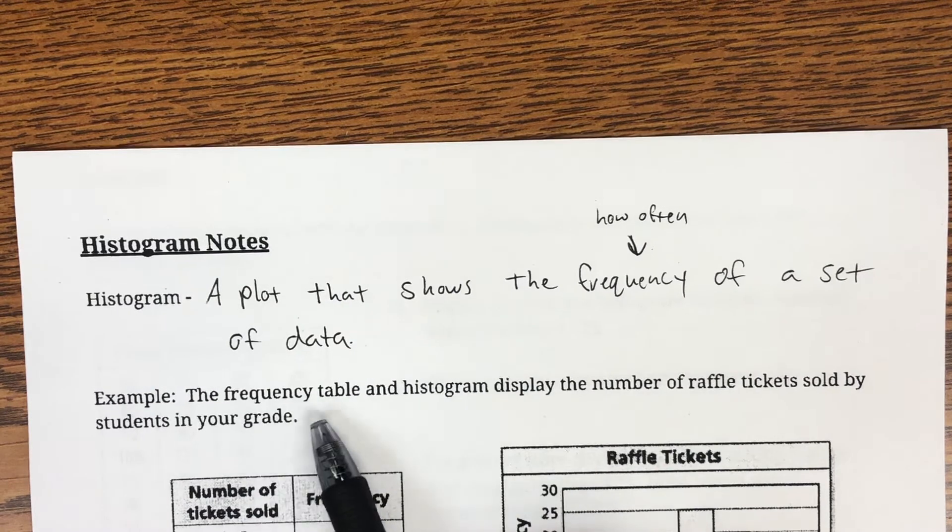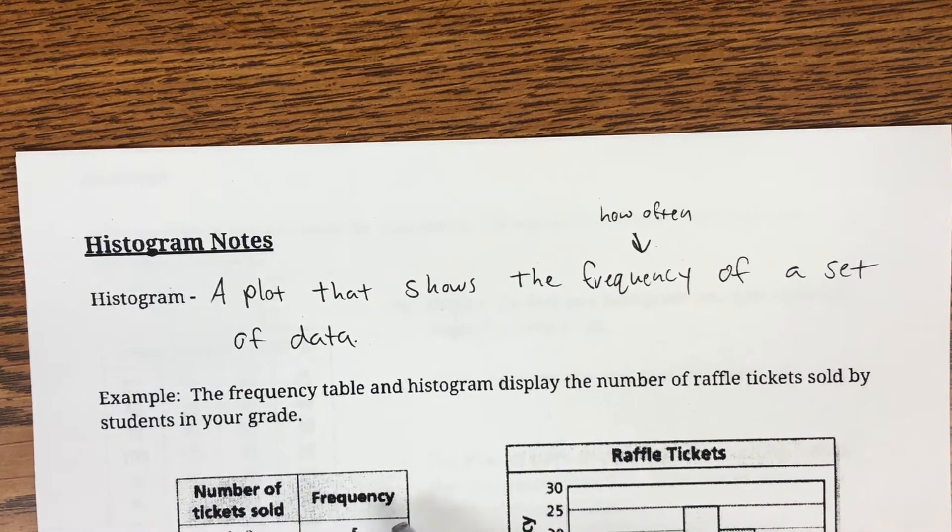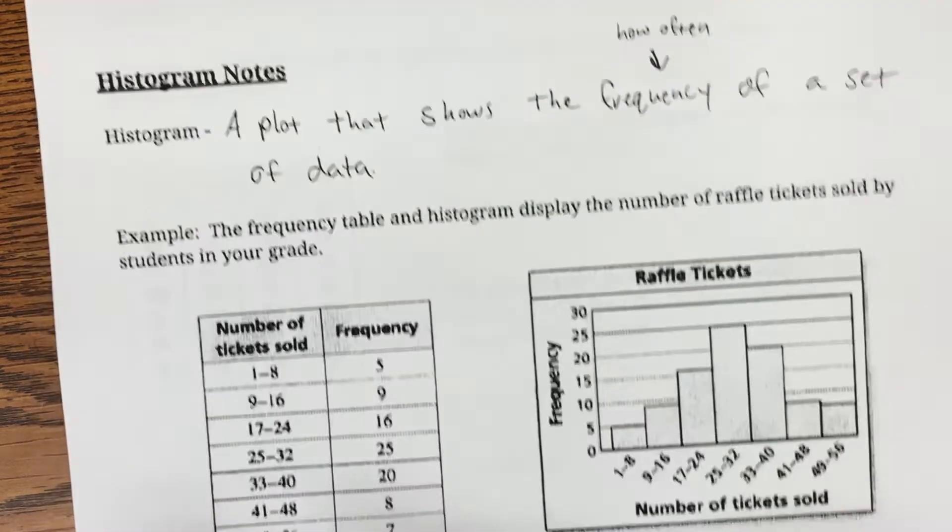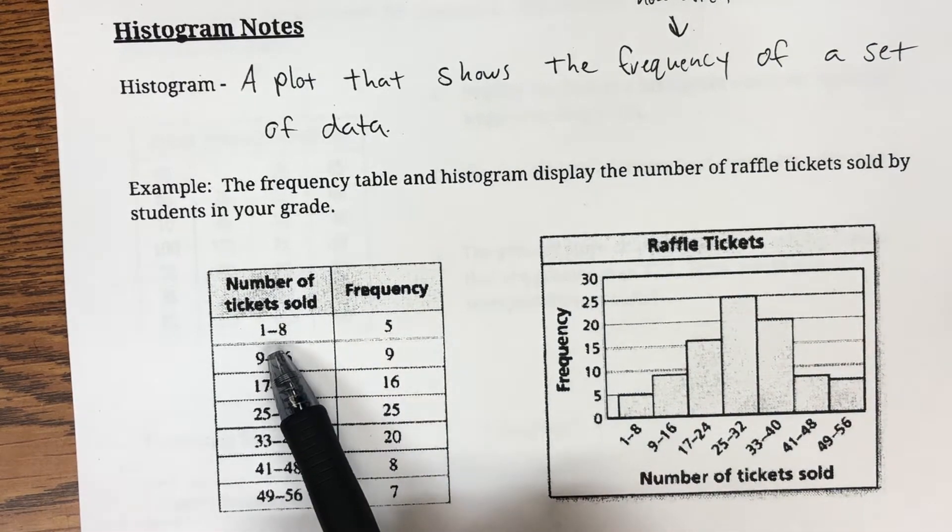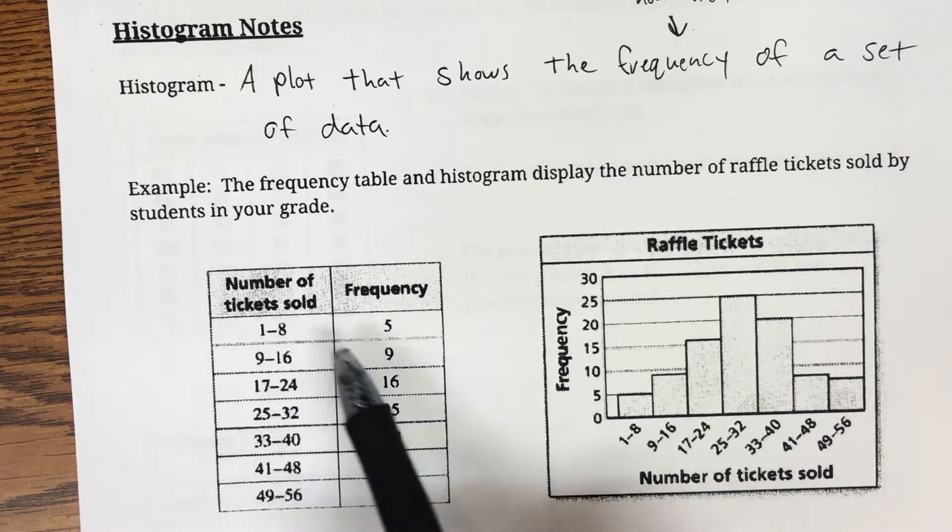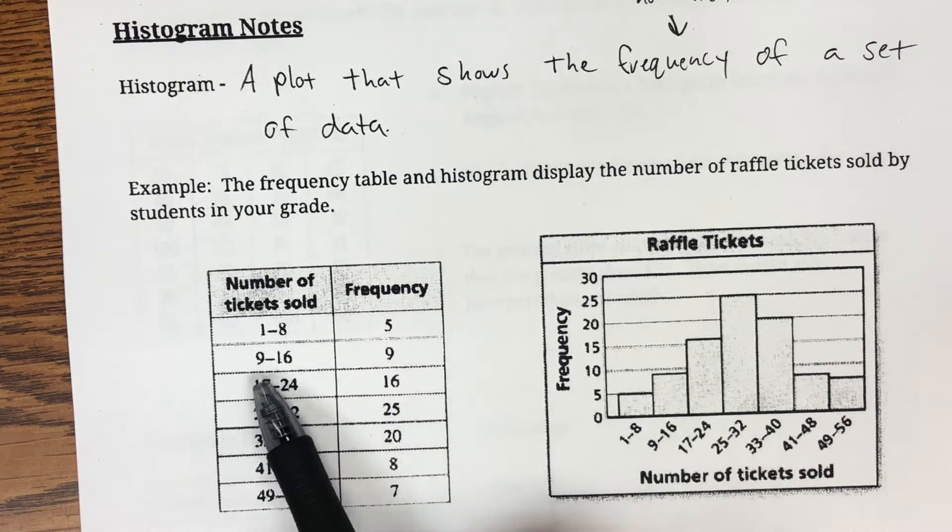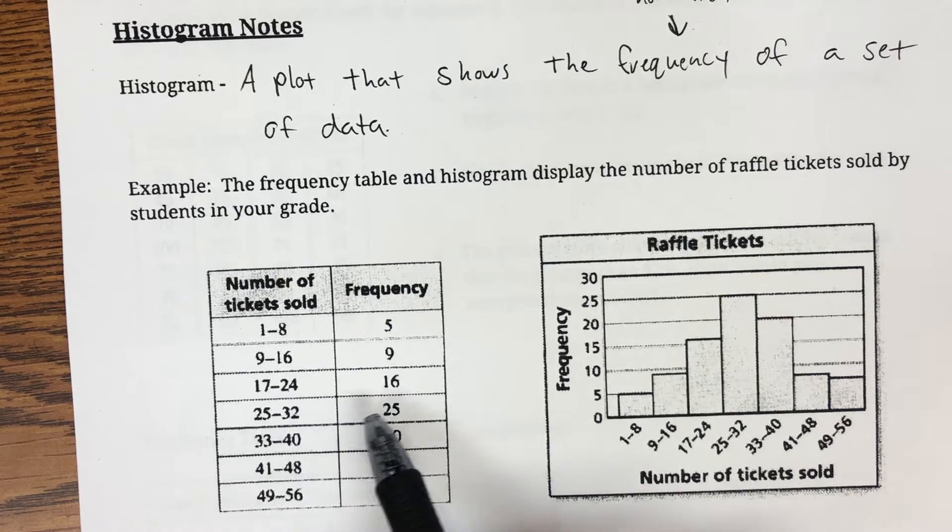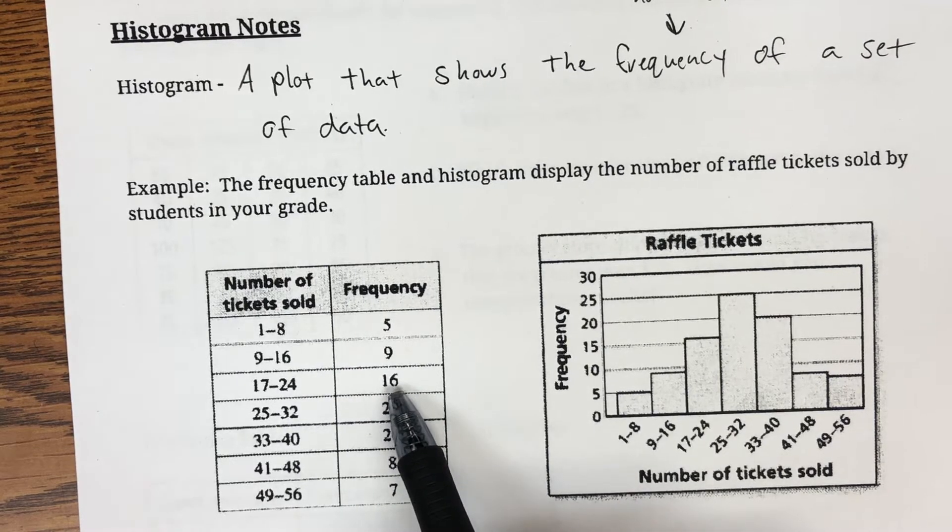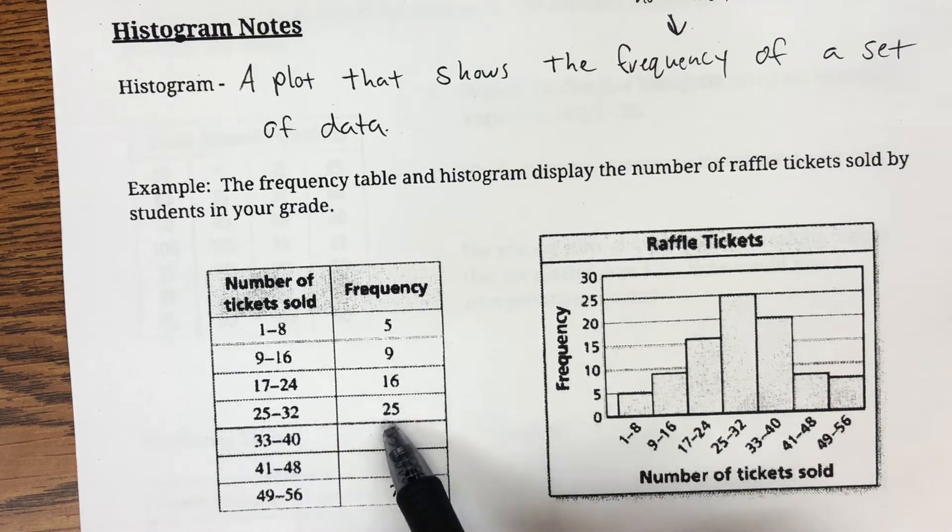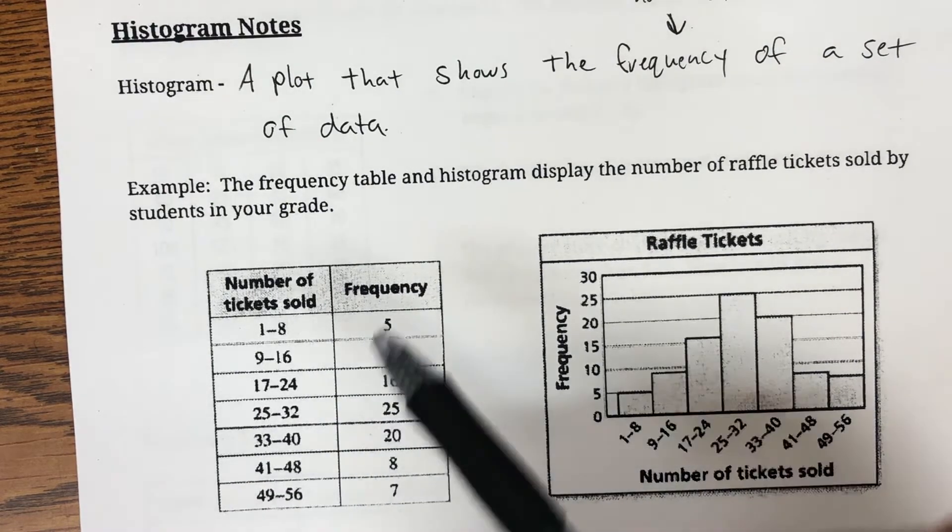The frequency table and histogram display the number of raffle tickets sold by students in your grade. So we're breaking this data apart into how many sold between 1 and 8. Apparently 5 sold between 1 and 8, 9 sold between 9 and 16, 16 sold between 17 and 24, between 25 and 32 we had 25, etc.